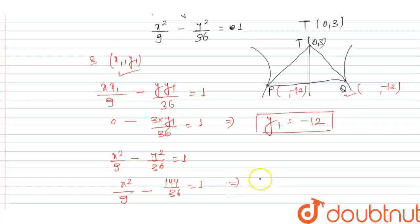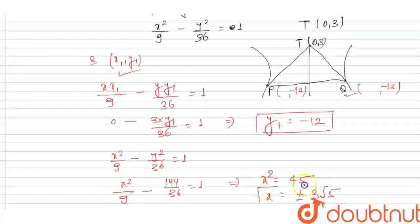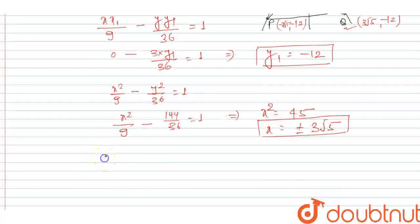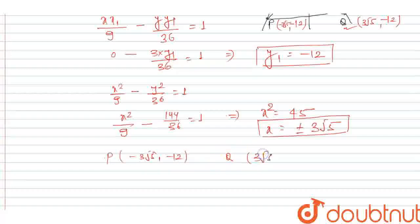From here, x² = 45, so x = ±3√5. Therefore, the coordinate of P is (-3√5, -12) and the coordinate of Q is (3√5, -12), and the coordinate of T is (0, 3).